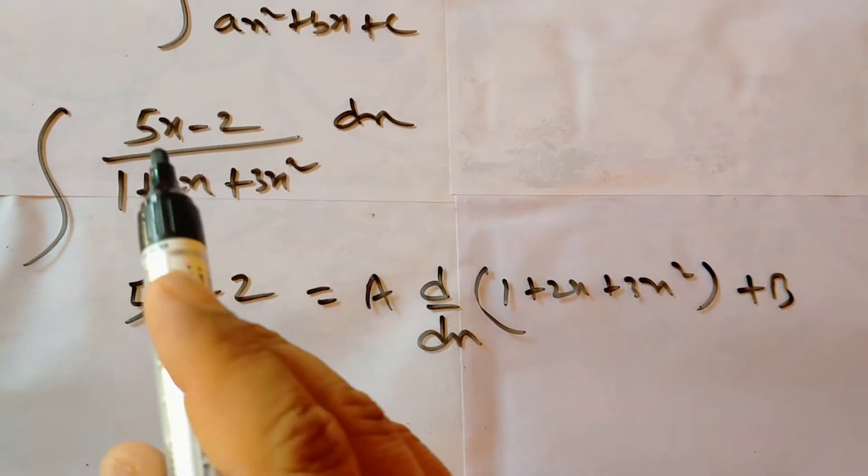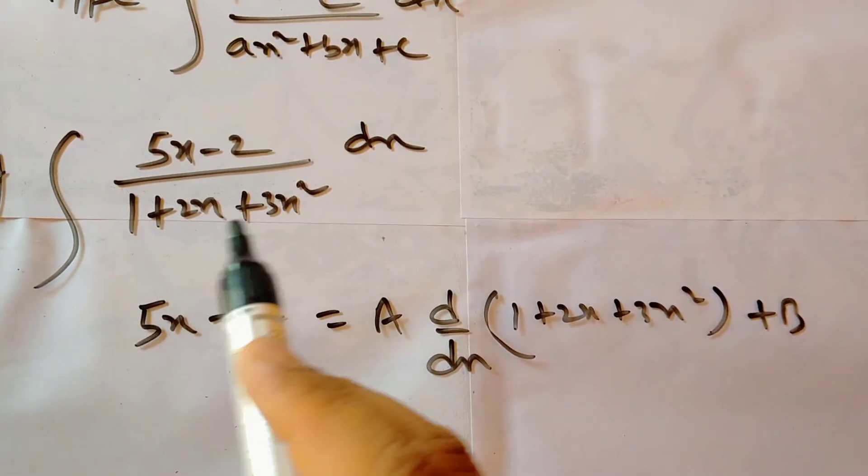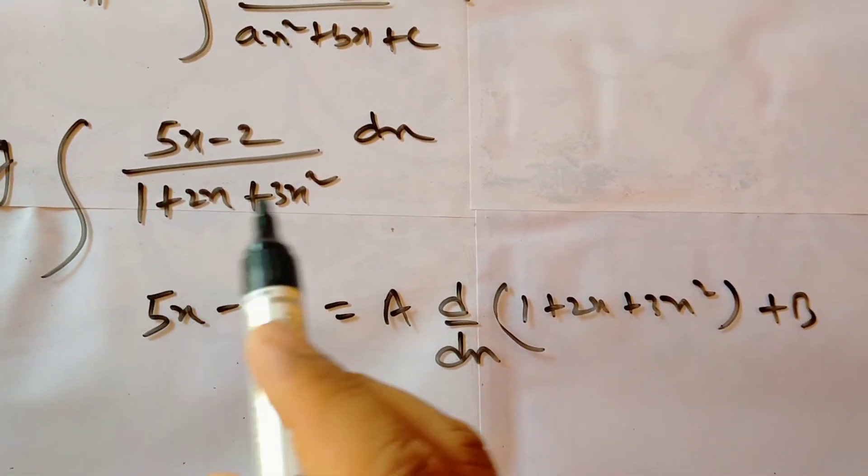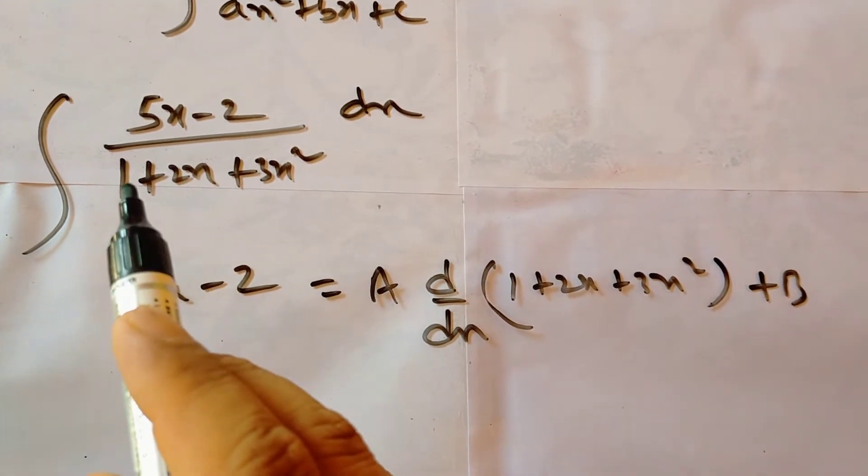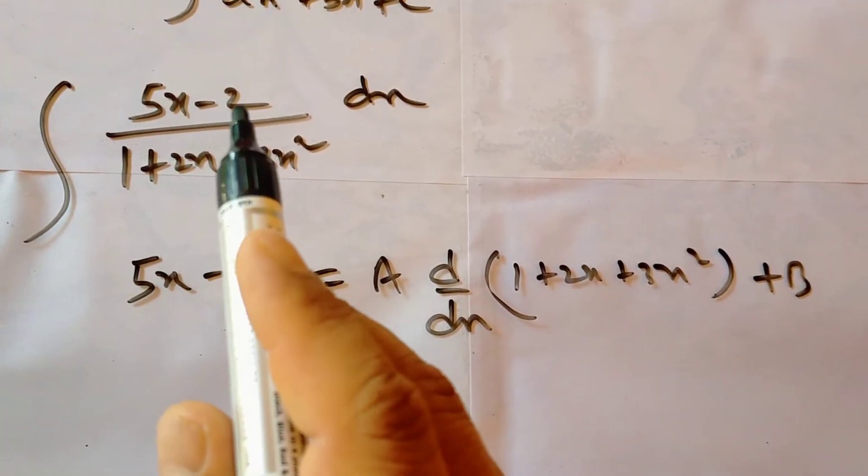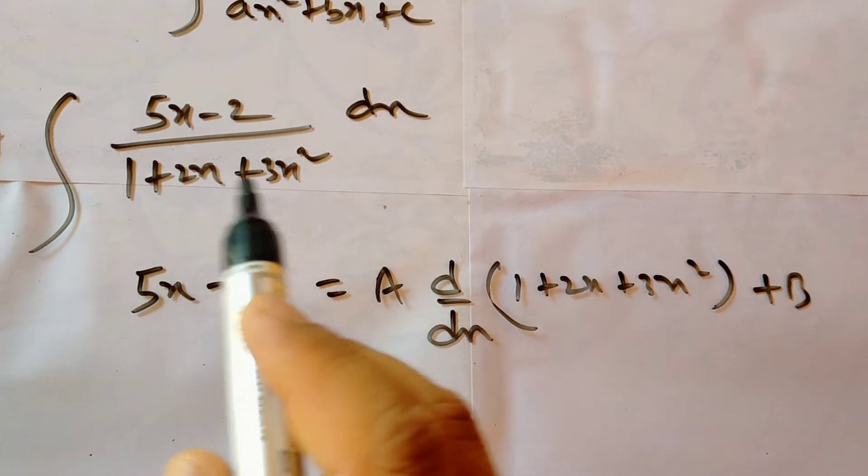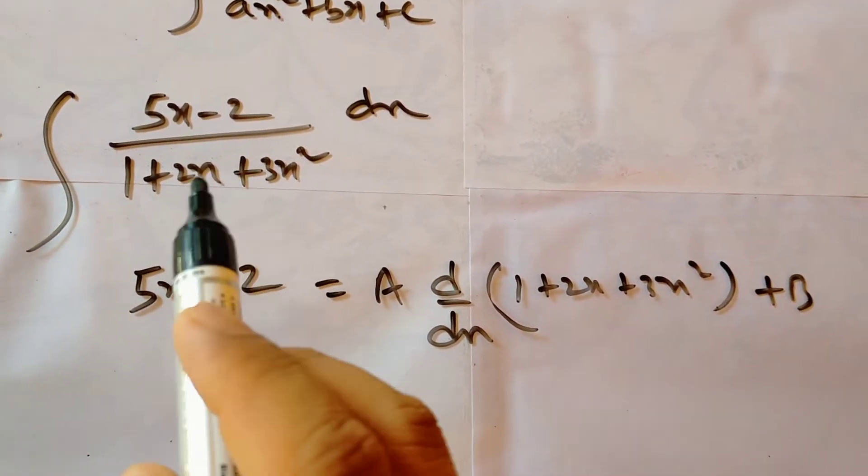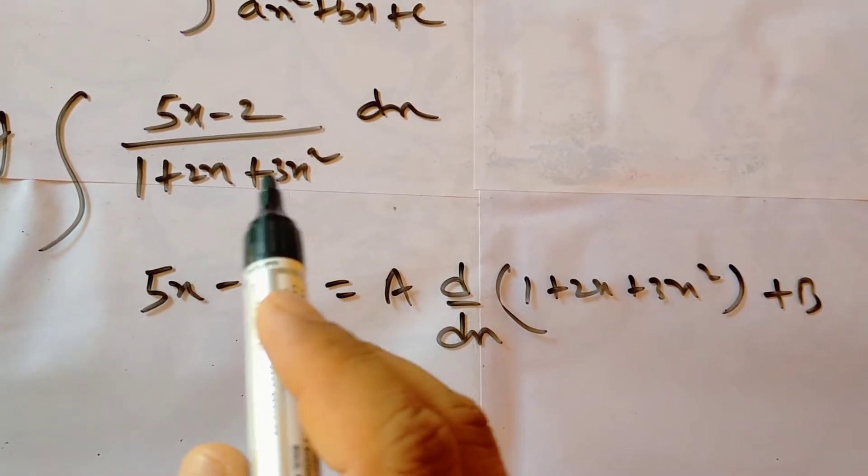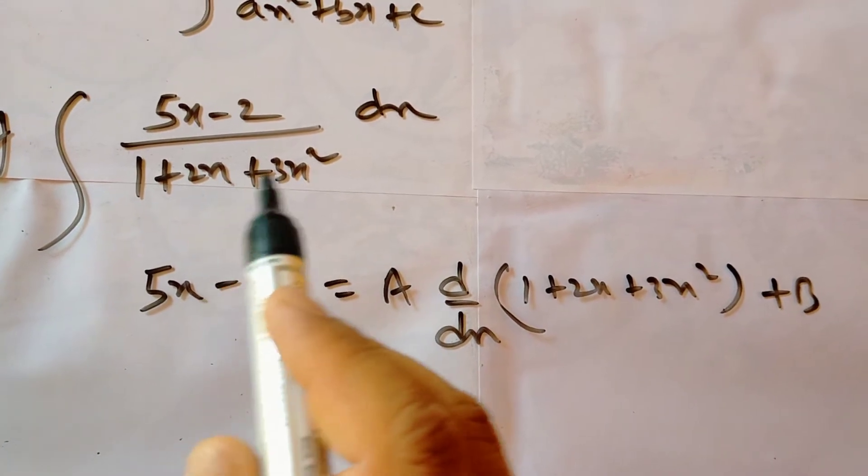Each question in which linear upon quadratic is there, you do not have to do this. You have to do this when you factorize it and you cannot factorize this. Why? Because if it is possible to factorize, then we have to move with partial fractions. Okay, so we have to do this type.